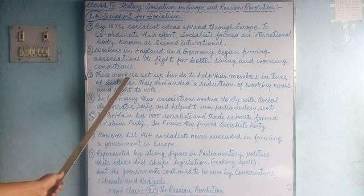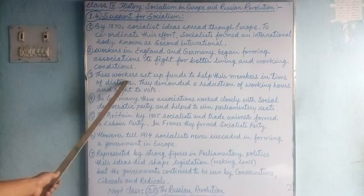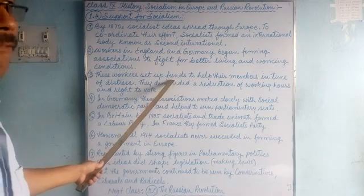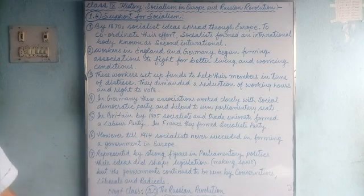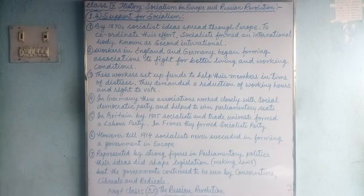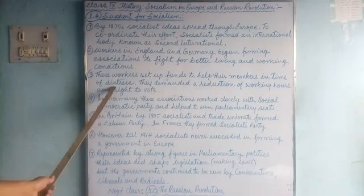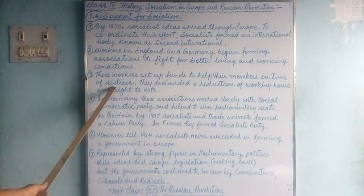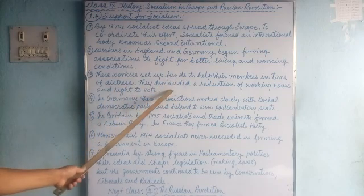Number 3: the workers in France, Germany, Britain, and other areas set up funds. They grouped together and formed funds to help their working members, such as factory workers. Factory workers would contribute some money every time they received payment, and the fund was used to help members in times of distress — during trouble — for example, for marriage or other purposes at home.